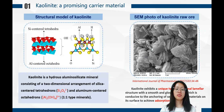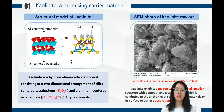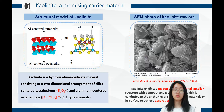We found that halloysite is a good support material for composite materials. Halloysite is a natural silico-aluminate mineral with excellent adsorption properties, abundant natural reserves, and low cost, which is conducive to catalyst dispersion. The structure of halloysite is shown in the figure. SEM of halloysite shows that it has a unique two-dimensional sheet structure with a smooth and glossy surface, which is conducive to the loading of semiconductor materials on its surface so as to achieve adsorption-degradation.